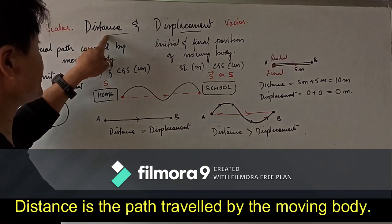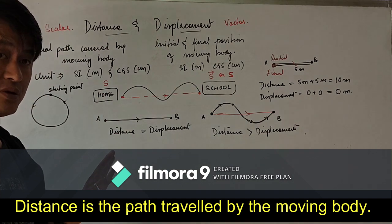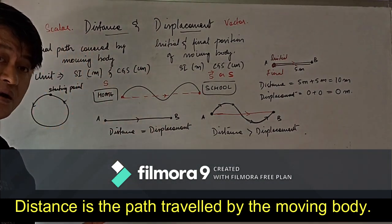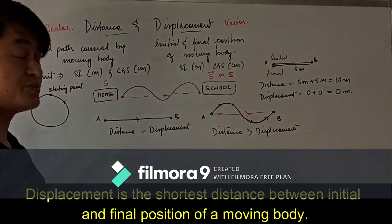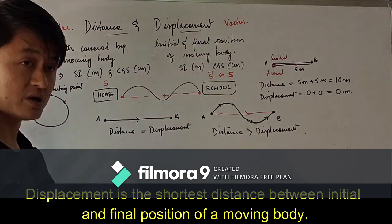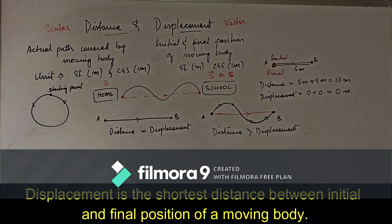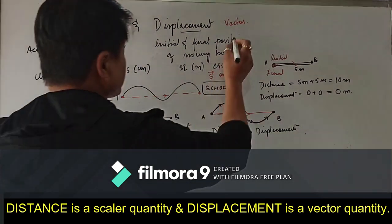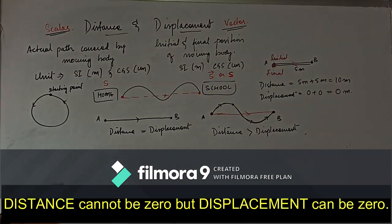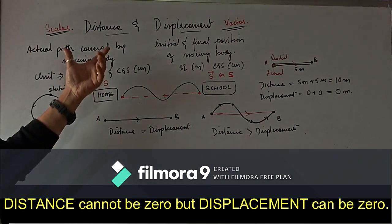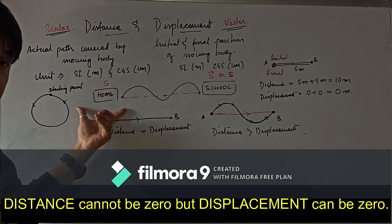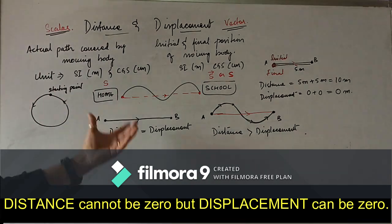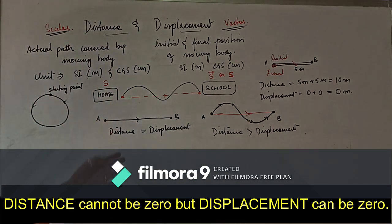The key differences between distance and displacement are: (1) Distance is the actual path covered by a moving body; displacement is the shortest distance between initial and final positions. (2) Distance is a scalar quantity; displacement is a vector quantity. (3) Distance can never be zero; displacement can be zero.